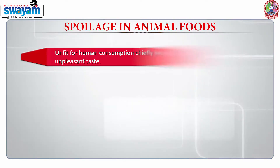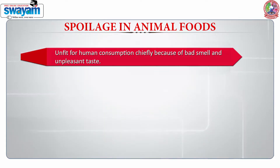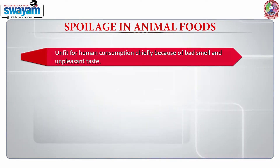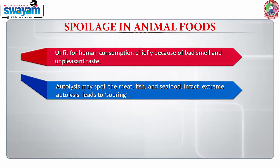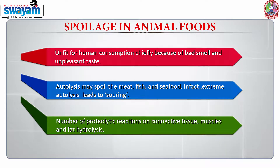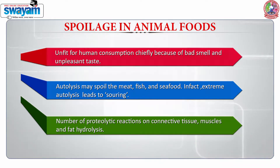When we talk about spoilage in animal foods, we say that it becomes unfit for human consumption chiefly due to bad smell and unpleasant taste. This happens due to the process which is known as autolysis, and it spoils the meat, fish and the seafood. Extreme autolysis leads to souring of the product and usually there are a number of proteolytic reactions which are taking place on the connective tissue, muscle and the fat. The fat also undergoes hydrolysis.